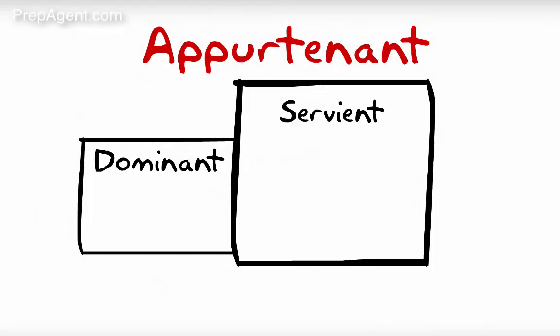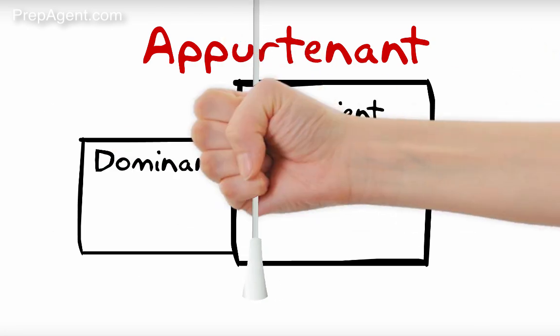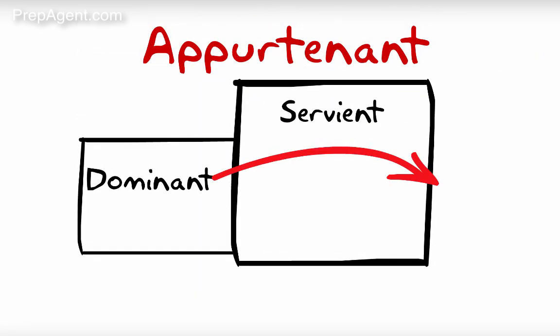An appurtenant easement involves two properties owned by two different owners. The two properties involved are called the dominant and servient tenement. When you're not sure about who is who, just think about what the two words mean. Dominant — they are dominating, they are in charge. Servient — they're serving. So the servient tenement is serving the dominant tenement's purpose. In more tangible terms, the dominant tenement is walking over the servient tenement's property.